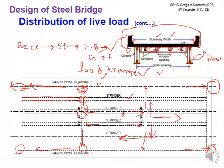For longitudinal members spanning along the bridge length, the first step in one-dimensional approximate analysis is lateral distribution of live load. This gives equivalent live loads along the center line of the longitudinal member. Then analysis is done for maximum forces — that step is called longitudinal distribution of live load. So the sequence is: first lateral distribution, then longitudinal distribution.